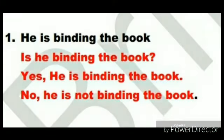Now we are moving on to the next B form verb — that is 'is.' We use 'is' for present tense singular. While using the negative form, you can use 'isn't' instead of 'is not.' 'He is binding the book.' Now we tell the question, the positive statement, and also the negative one.